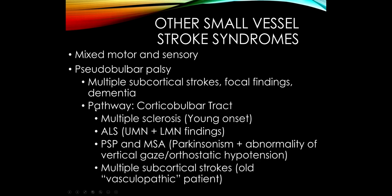What all different etiologies of pseudobulbar palsy have in common is involvement of the corticobulbar tract. The differential includes multiple sclerosis, where demyelination of the corticobulbar tract occurs in a younger patient with a relapsing-remitting course, and ALS, where motor neuron disease causes the neurons contributing to the corticobulbar tract to degenerate — these patients have progressive upper and lower motor neuron findings and fasciculations.